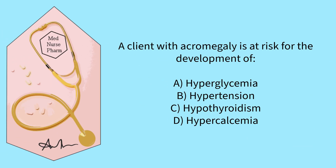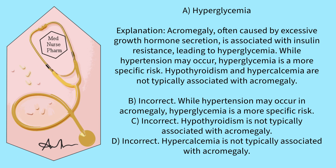A client with acromegaly is at risk for development of: A) hyperglycemia, B) hypertension, C) hypothyroidism, D) hypocalcemia. Pause the video and select your answer. The correct answer is A, hyperglycemia. Acromegaly, often caused by excessive growth hormone secretion, is associated with insulin resistance, leading to hyperglycemia. While hypertension may occur, hyperglycemia is a more specific risk.